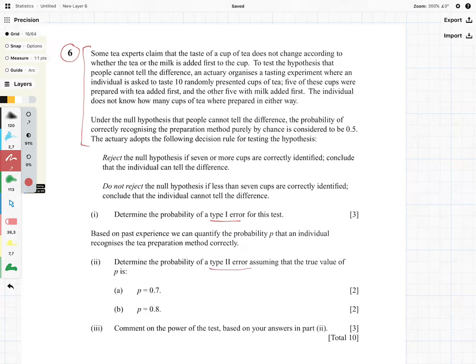I'm going to read through the question and then we're going to get stuck into it. It says some tea experts claim that the taste of a cup of tea does not change according to whether the tea or the milk is added first to the cup. To test the hypothesis that people cannot tell the difference, an actuary organizes a tasting experiment where an individual is asked to taste 10 randomly presented cups of tea. Five of these cups were prepared with tea added first and the other five with milk added first. The individual does not know how many cups of tea were prepared in either way.